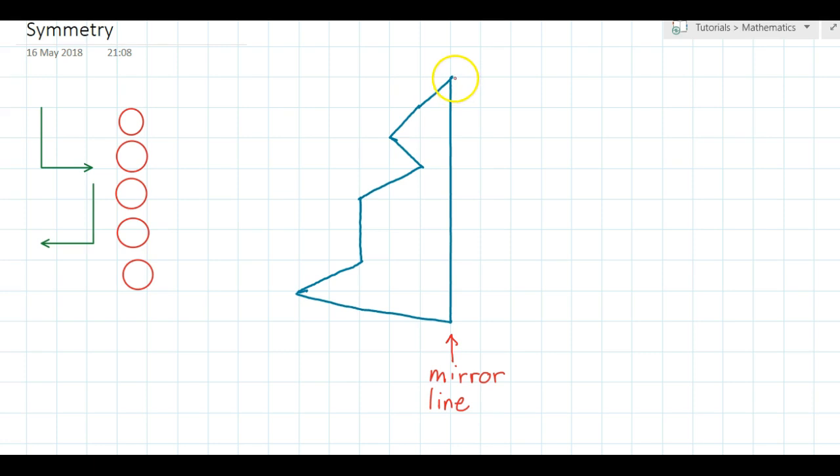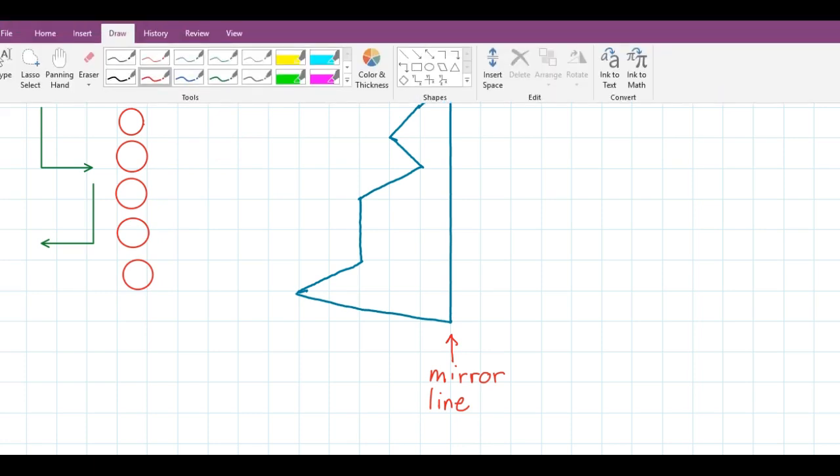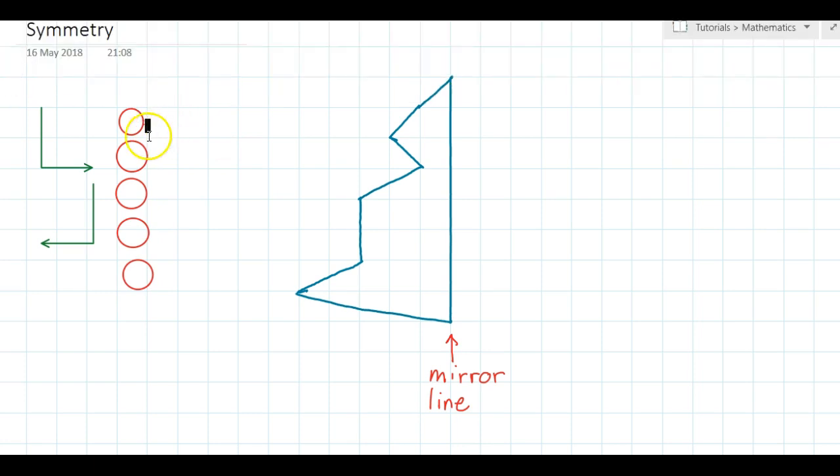The idea is that you have to reproduce or make this shape on this side of the mirror line. The first thing you need to do is look at the characteristics of the shape that you have to draw. So if I just bring these circles around and show you what I'm talking about, I'm going to try and reproduce these corners in my drawing on the other side of the mirror line.